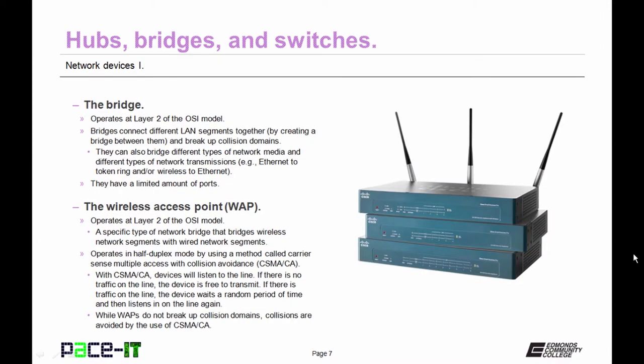Now let's move on to the bridge. The bridge operates at layer 2, the data link layer of the OSI model. Bridges connect different local area network segments together by creating a bridge between them, and they break up collision domains, so each side of the connection is its own collision domain. Bridges can also bridge different types of network media and different types of network transmissions — for example, between Ethernet and token ring, or wireless to Ethernet, and so on. Bridges also have a limited amount of ports.